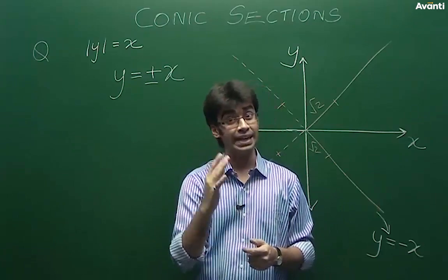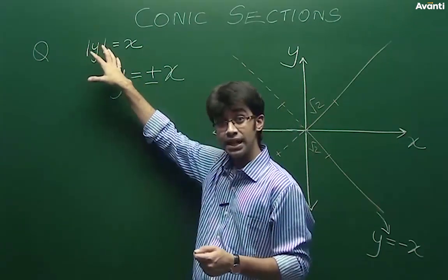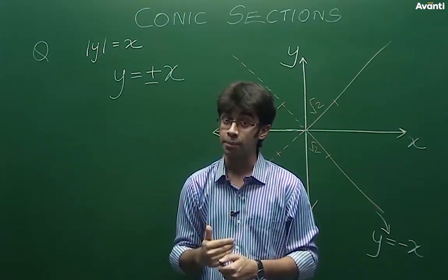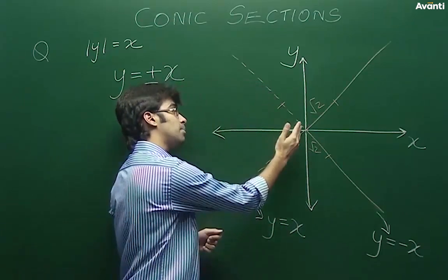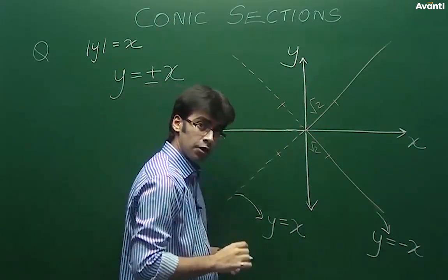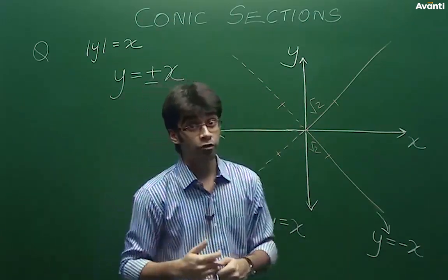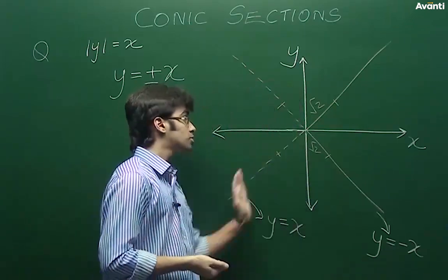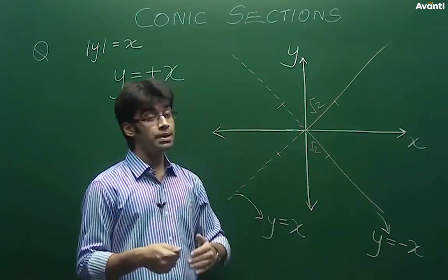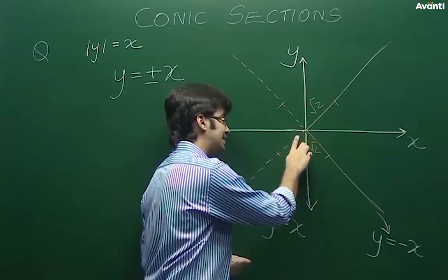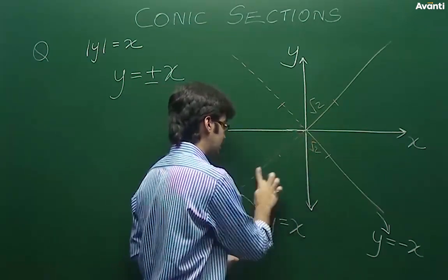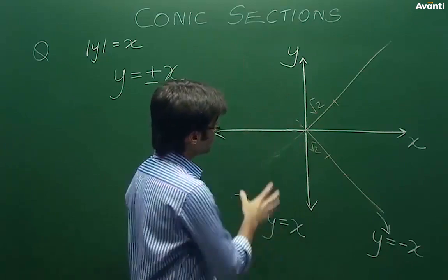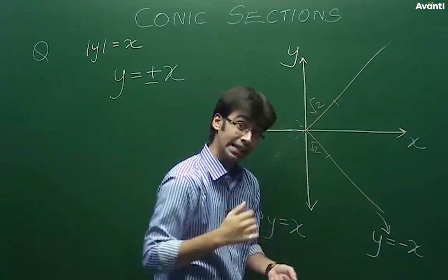Positive या negative — क्योंकि mod present है, x की value हमेशा सिर्फ positive ही हो सकती है, which means कि x कभी भी negative side पे नहीं आ सकता for any value of y. लेकिन हमने ये दोनों lines में x को दोनों side पे extend कर लिया, which means कि actually इस line में ये part नहीं हो सकता, और ना ही ये part हो सकता है।